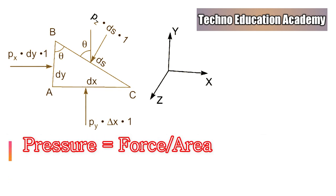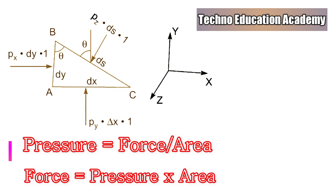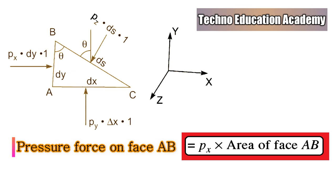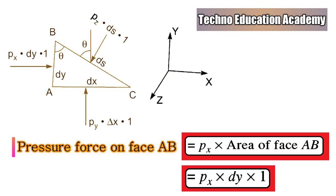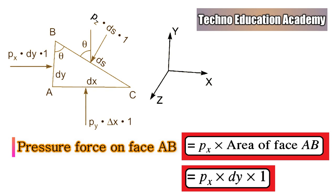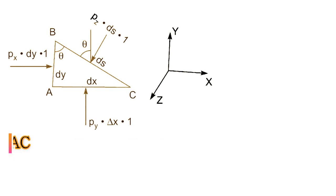We know that pressure equals force divided by area, so force equals area of face multiplied by pressure. The pressure force in the x-direction is Px, and the area of face AB equals dy into 1, since the width of the fluid element is unity. Therefore, the pressure force on face AB equals Px multiplied by dy into 1.